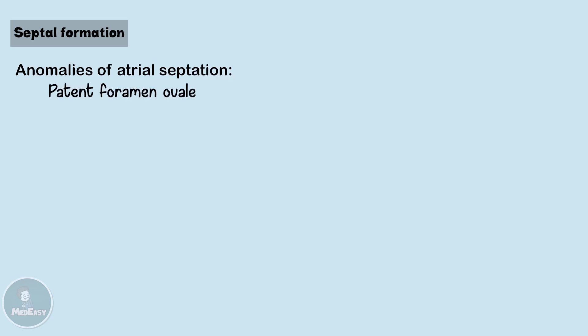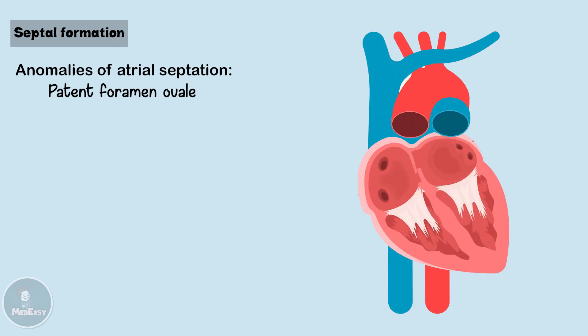A patent foramen ovale occurs when the septum primum and septum secundum fail to fuse together after birth. This is not technically considered an atrial septal defect because there isn't a fixed opening between the atria that allows unrestricted blood flow. Rather, the septa are just unsealed, although of sufficient size to cover the foramen ovale.